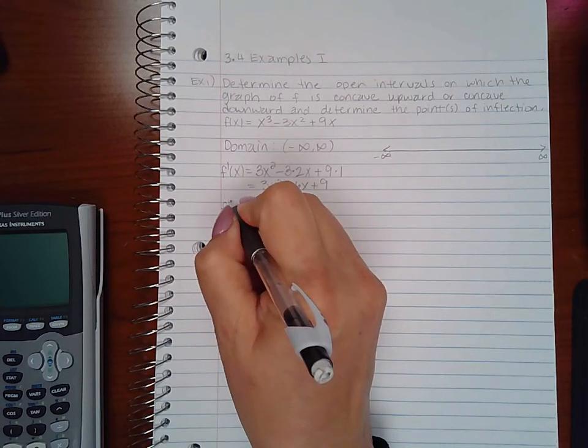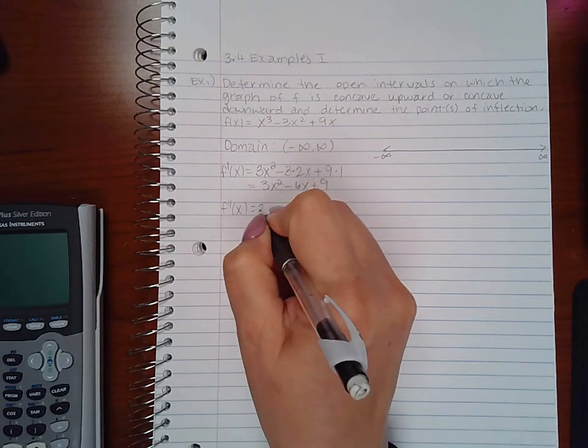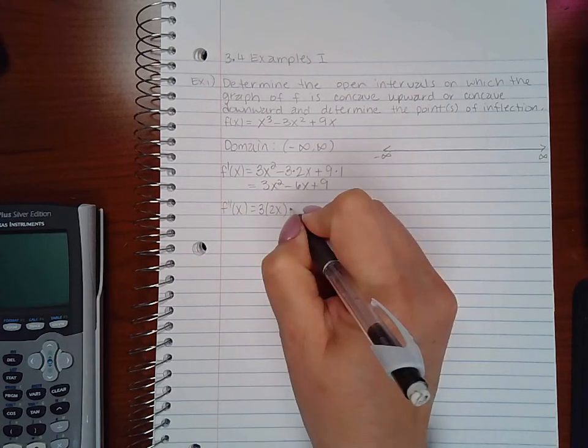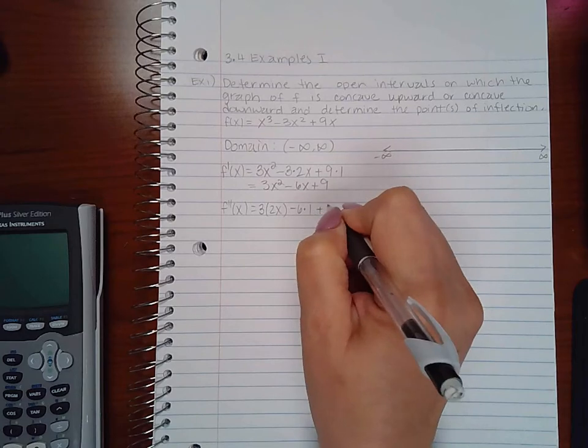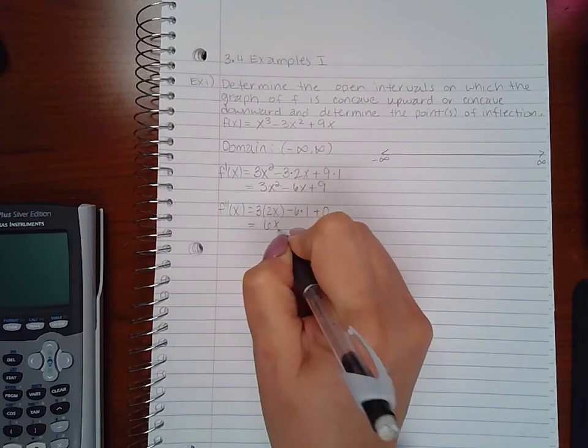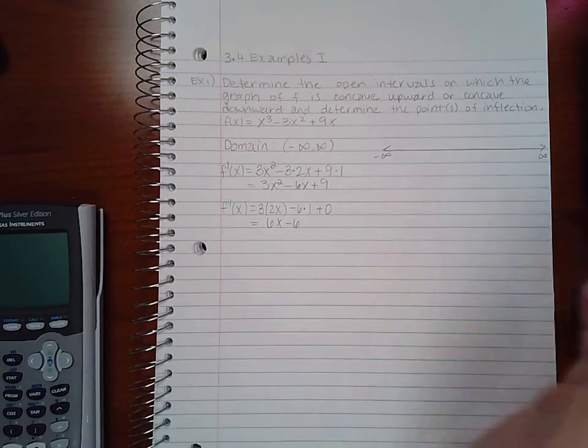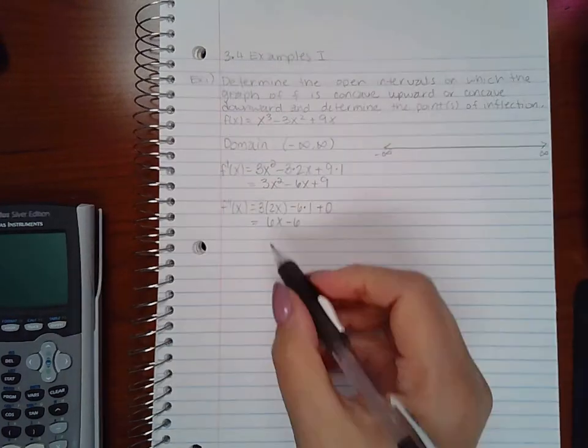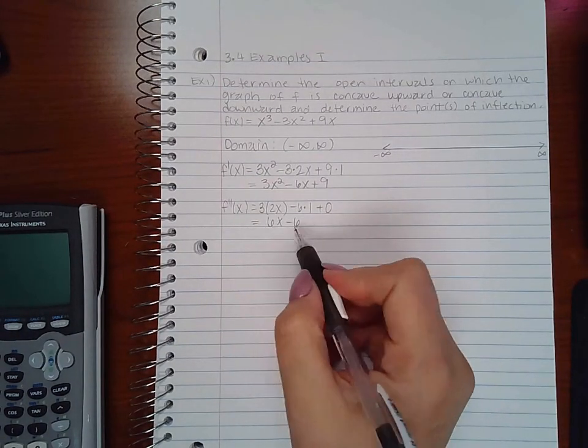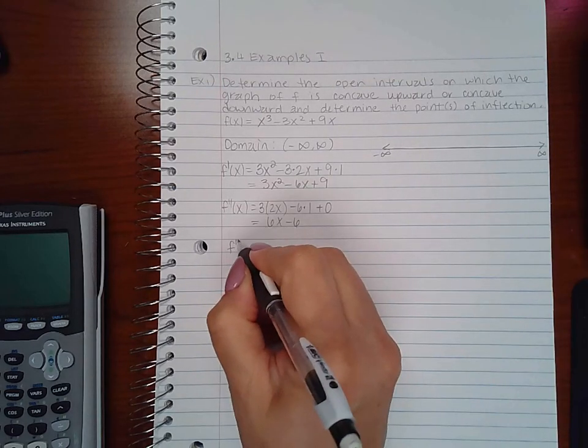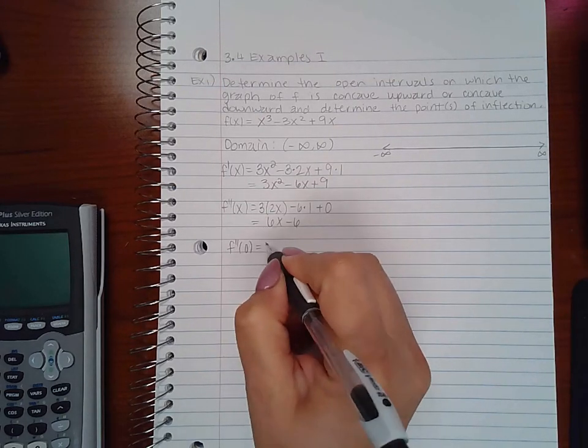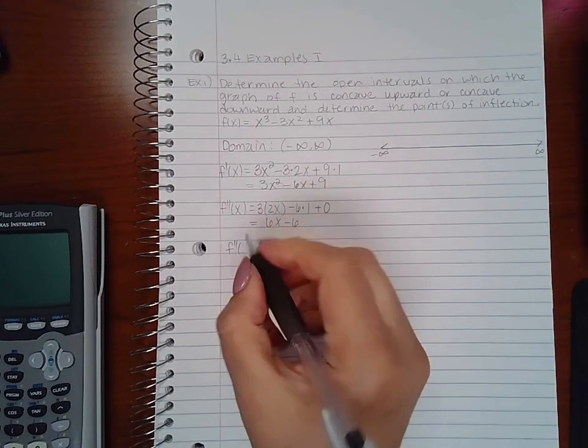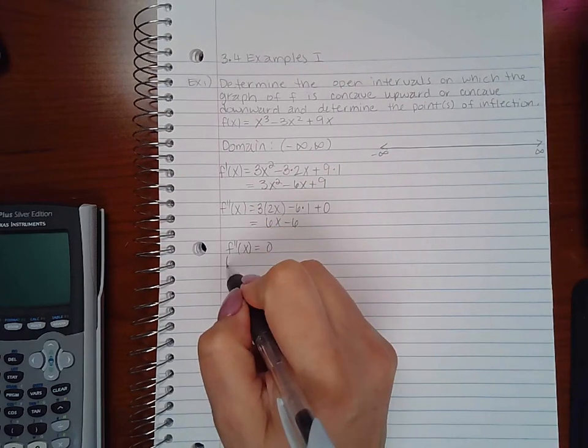Then I need to find my second derivative which would be 3 times 2x minus 6 times 1 plus 0, or 6x minus 6. So this second derivative will not be undefined anywhere so I don't need to worry about where F double prime is undefined. However I do still need to consider where F double prime of x equals 0.